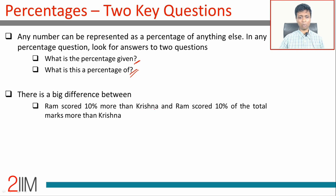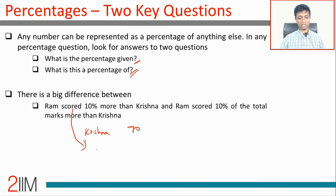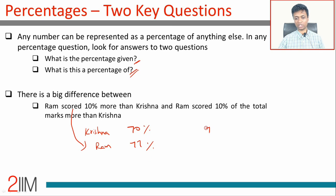For example: 'Ram scored 10% more than Krishna' versus 'Ram scored 10% of the total marks more than Krishna' — these are very different. In the first case, if Krishna scored 70%, Ram would have scored 77% (that's 1.1 × 70%). In the second case, Ram would have scored 80% — 10% of the total marks added to Krishna's score.